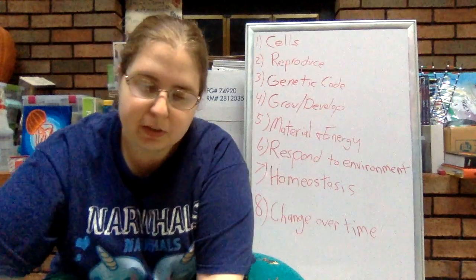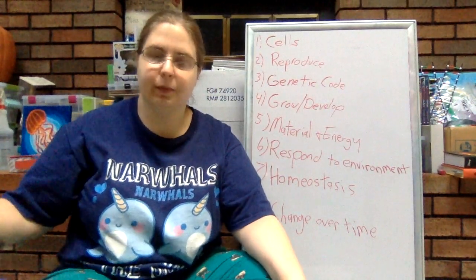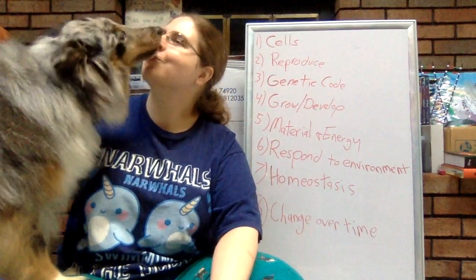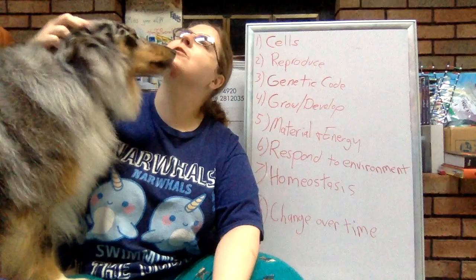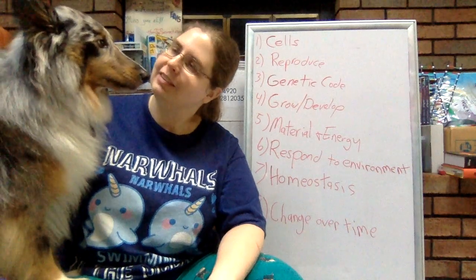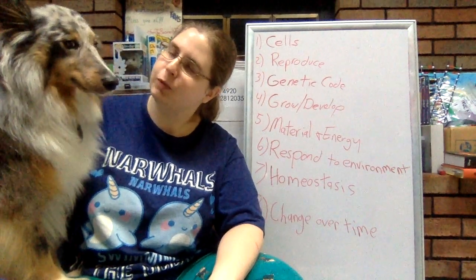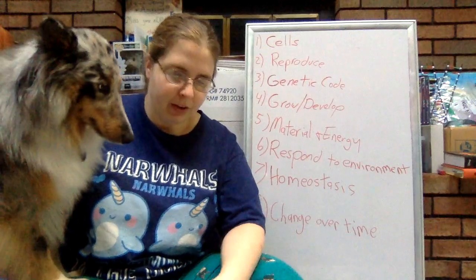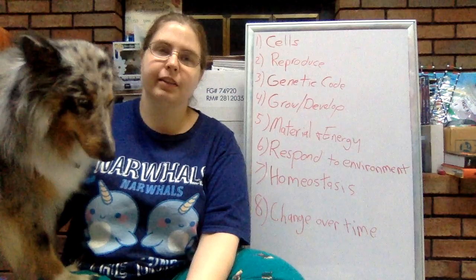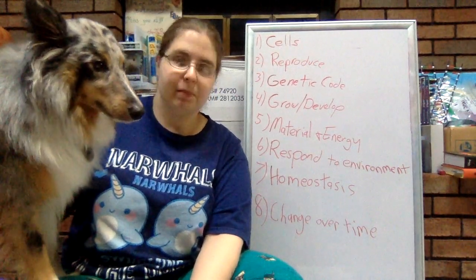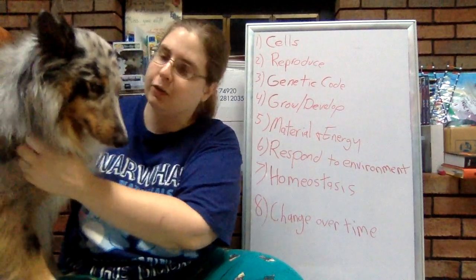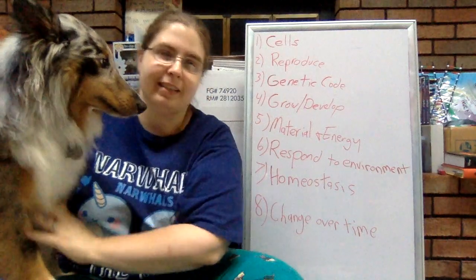Here we have my favorite living thing — Ripley! He was out chasing the birdies and squirrelies, also living things. So, first criteria — there are eight — is that all living things are made out of cells. They can be made out of many cells, like Ripley here. He is a multicellular organism, made of many, many cells.